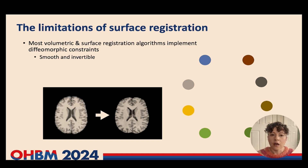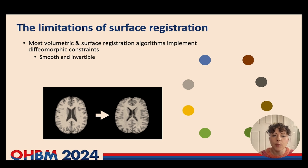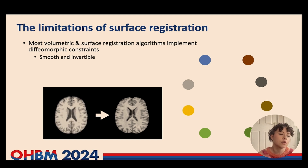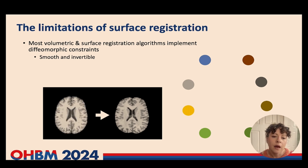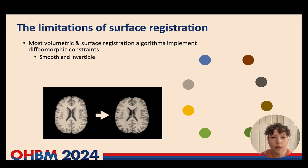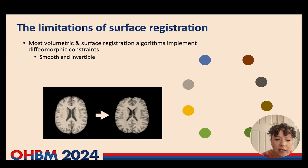We now have a pretty good understanding of the macroscopic organisation of the cortex. And therefore, most people would be sceptical if we saw a mapping that mapped some location in the frontal lobe from one individual to the visual cortex in another. For those reasons, most surface and volumetric registration algorithms implement what are known as diffeomorphic constraints imposed through biophysically inspired regularisation terms that enforce a smooth and invertible mapping.